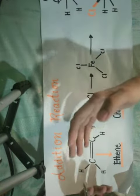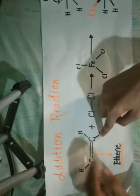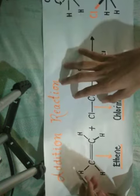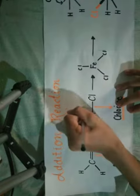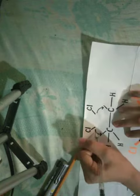As you could see, the presence of double bond makes etine quite reactive. So, when we add chlorine to the etine under suitable condition or ferric chloride, the double bond, as you could see here, tends to break.